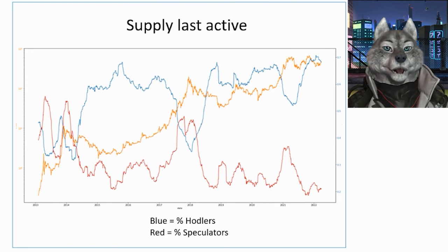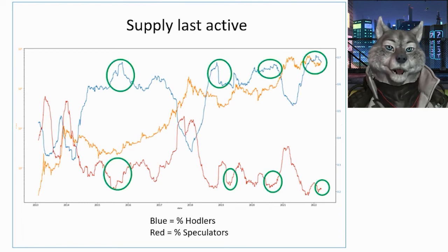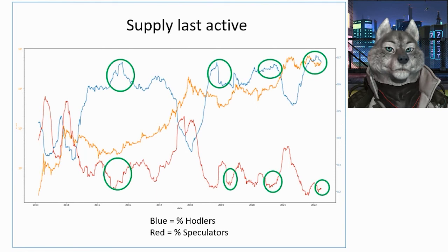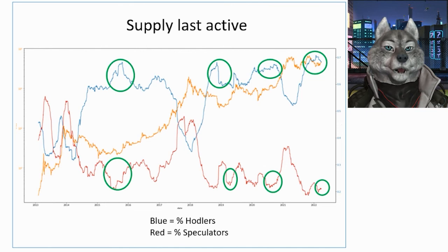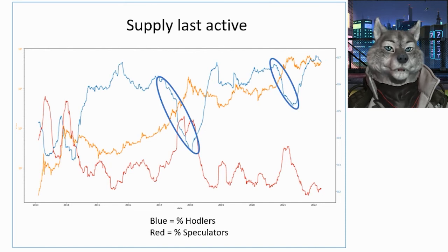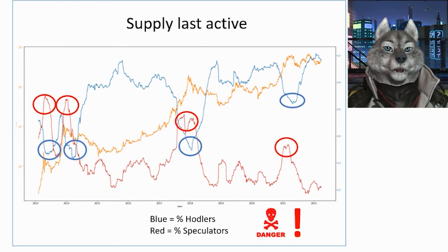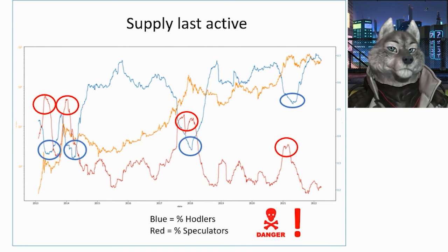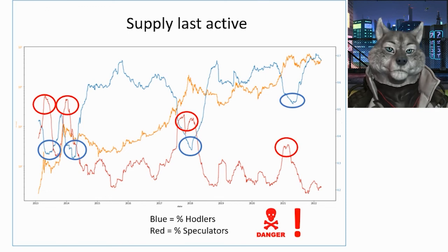When the number of hodlers is very high in relation to speculators, this signals price bottoming, indicating that there are few speculators in the market who want to profit in the short term, and only long-term investors are left. As long-term investors do not sell their coins easily, this generates some scarcity in the market and prices rise again. On the other hand, when prices start to get high, long-term investors start to sell their coins to make profits, so the percentage of hodlers falls. When there are too few hodlers and too many speculators, this signals a price top, as there is too much short-term greed. As speculators do not hold on to their coins for long, any loss motivates them to sell, which causes massive falls in prices.